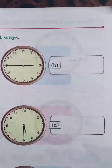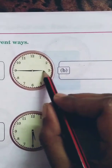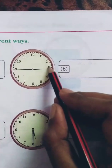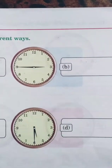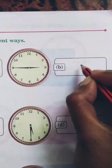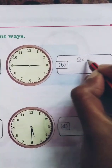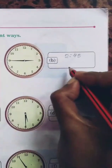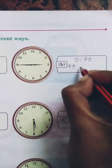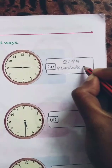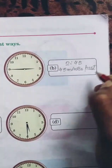Question B: the hour hand is near 3 — not exactly at 3 — and the minute hand is at 9, meaning 45 minutes. First way: write 2:45. Second way: write '45 minutes past 2.'